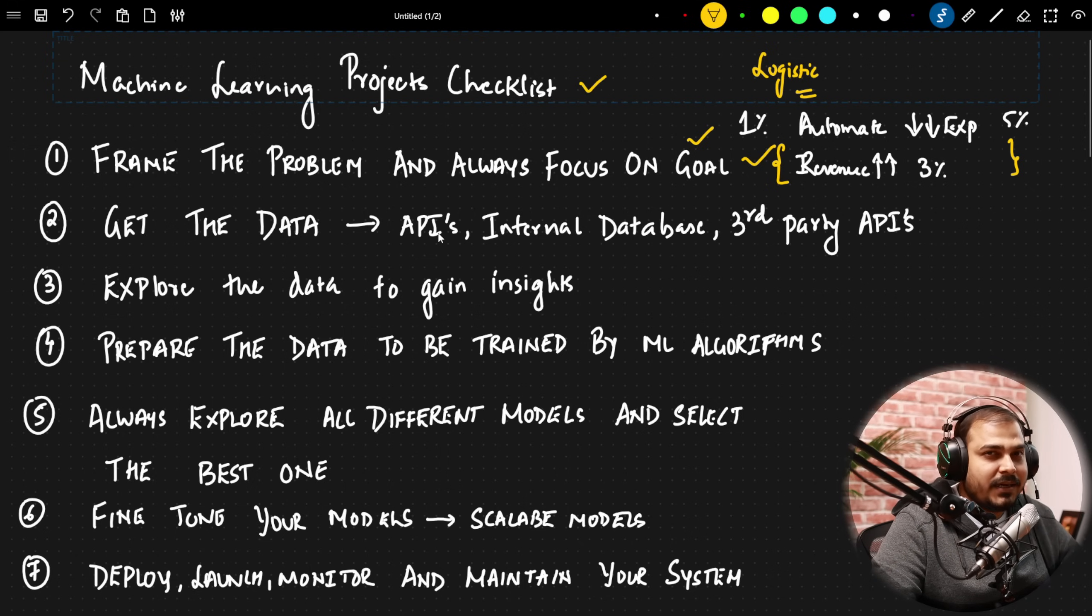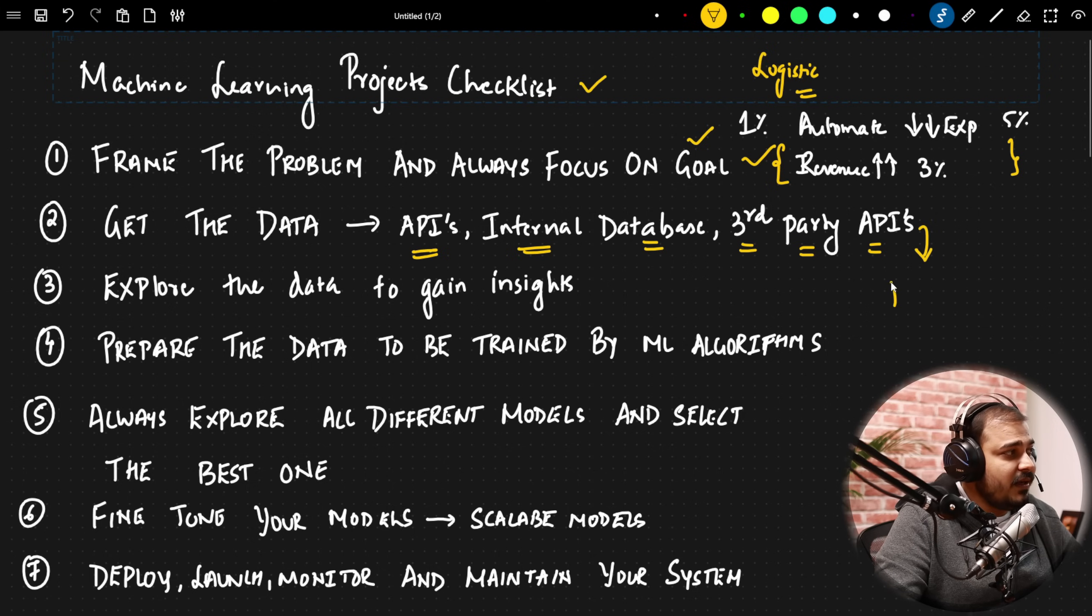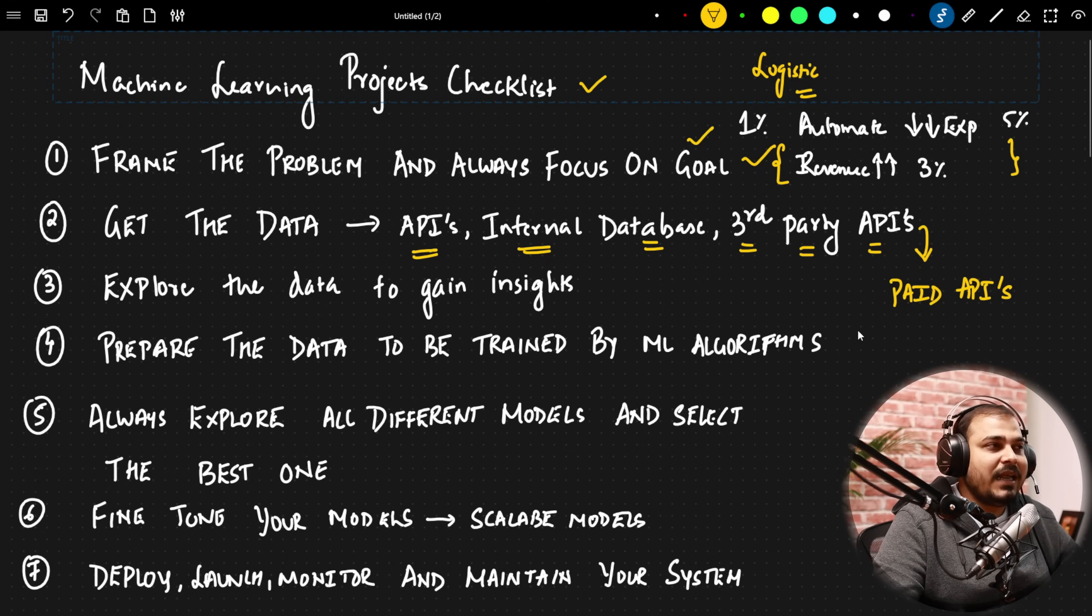Then, obviously, the data set. Because whenever you go for the interviews, once you talk about the project, the next thing is that they would definitely be curious to know about the data. Where did you get the data set from? And even though you are from other background, you definitely will be working with huge amount of data, probably in the Excel sheets for creating presentation and many more things. So here you have APIs, internal database, third-party APIs. This may be some kind of paid APIs itself. That's fine. So all these things, when you are able to say, definitely they'll get an idea that you have also done some kind of exploration to basically find out the data set that would definitely be used in actually creating an entire machine learning project.